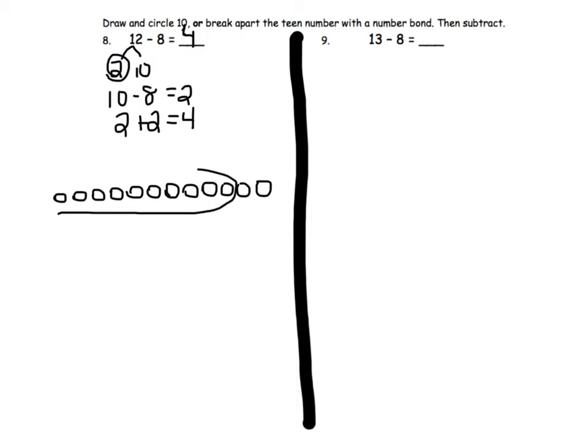We will circle 10 dots and subtract 8. That leaves us 2 plus 2 equals 4, 1, 2, 3, 4.